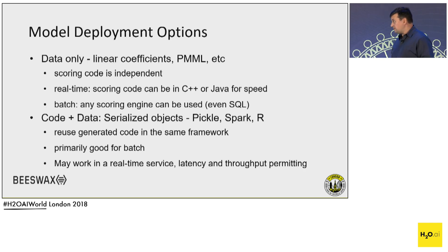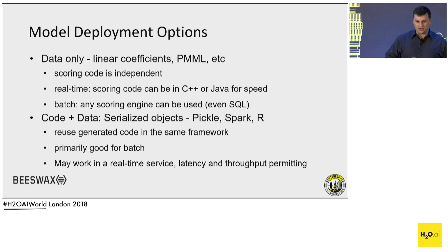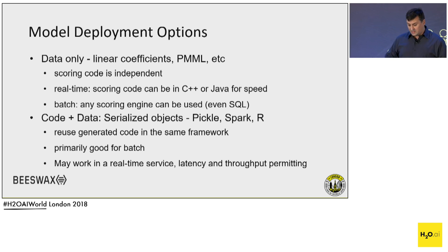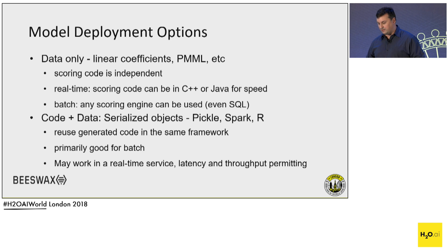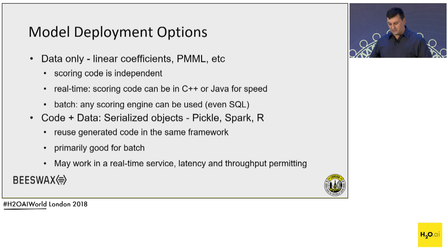How we deploy models is also important. There are two main ways. One is deploying data only — for example, if it's a linear model, we can just ship coefficients to a scoring system, where the scoring code is completely independent, can be written by different people in a different language. For batch, if it's linear coefficients, we can even score in SQL, because it's just matrix multiplication. The more common scenario now is that the model is persisted as code and data — an object the training framework saves, and the same framework loads it in the scoring engine.